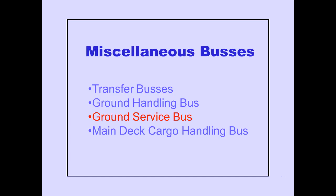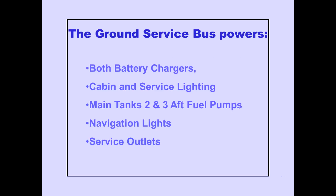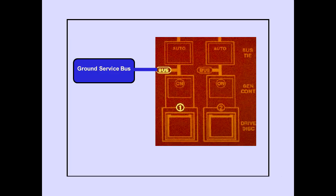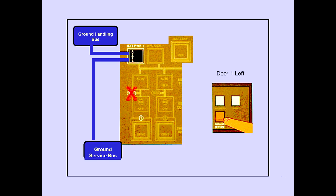Now let's discuss the ground service bus. The ground service bus powers both battery chargers, cabin and service lighting, main tank 2 aft fuel pump, navigation lights, and service outlets. The ground service bus is normally powered by AC bus 1. If AC bus 1 is unpowered, the ground service bus can be powered from the same source powering the ground handling bus by pushing the ground service switch at the 1L door.